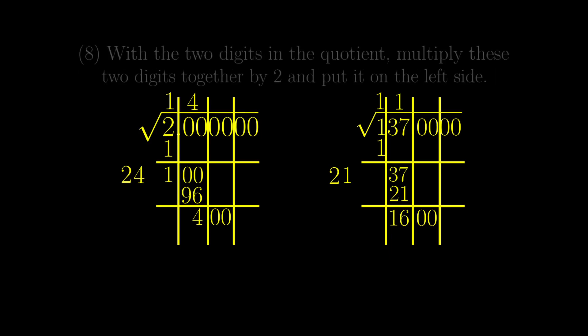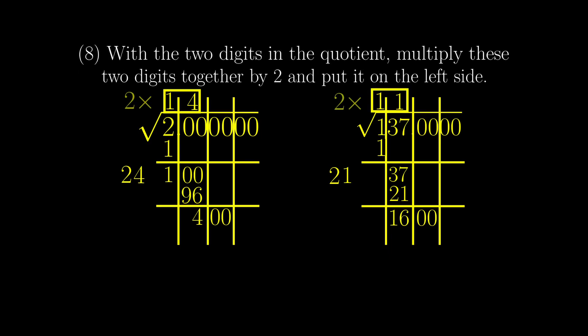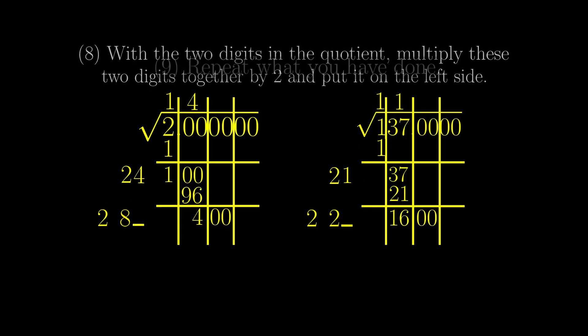With the two digits in the quotient, multiply these two digits together by 2, and put it on the left side. Repeat what you have done.